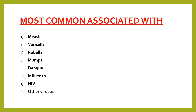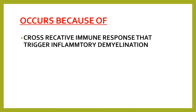The infections associated with or preceding ADEM include: the most common is measles infection or live measles vaccination; others include varicella, rubella, mumps, dengue, influenza, HIV, or any other virus that can lead to ADEM. It occurs because of a cross-reactive immune response that triggers inflammatory demyelination — antibodies from the viral infection cross-react with brain tissue and produce the inflammatory demyelination.